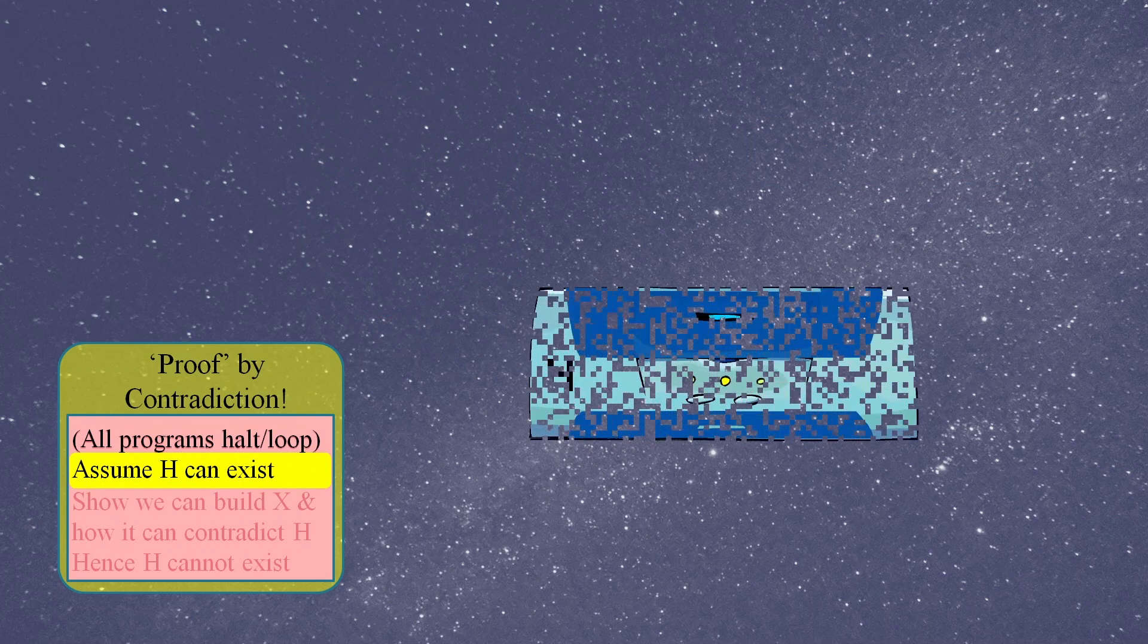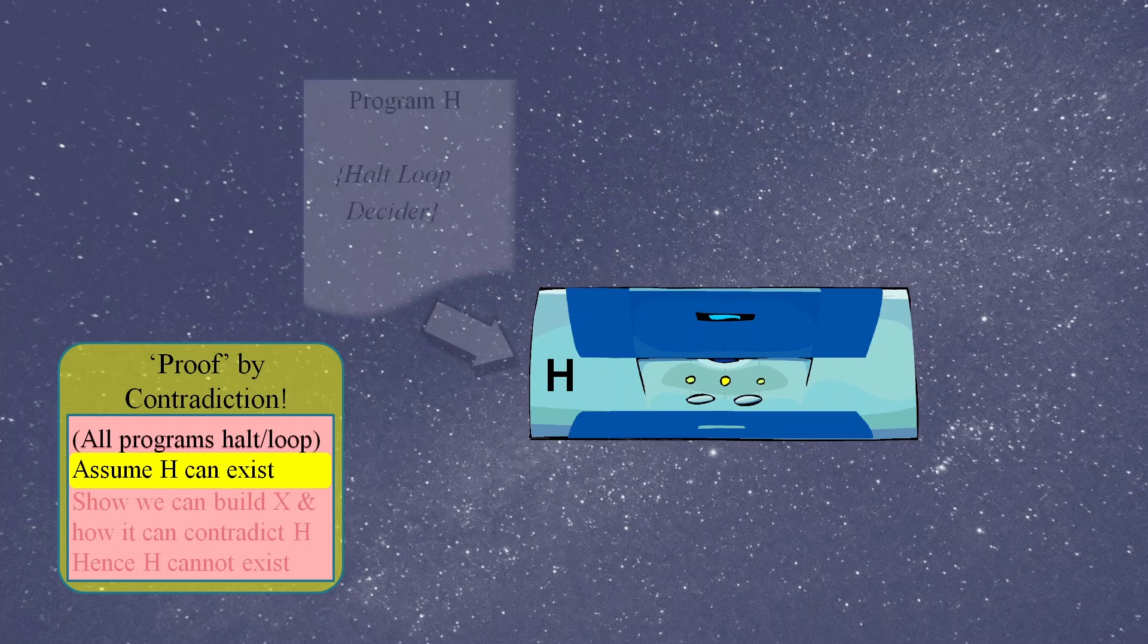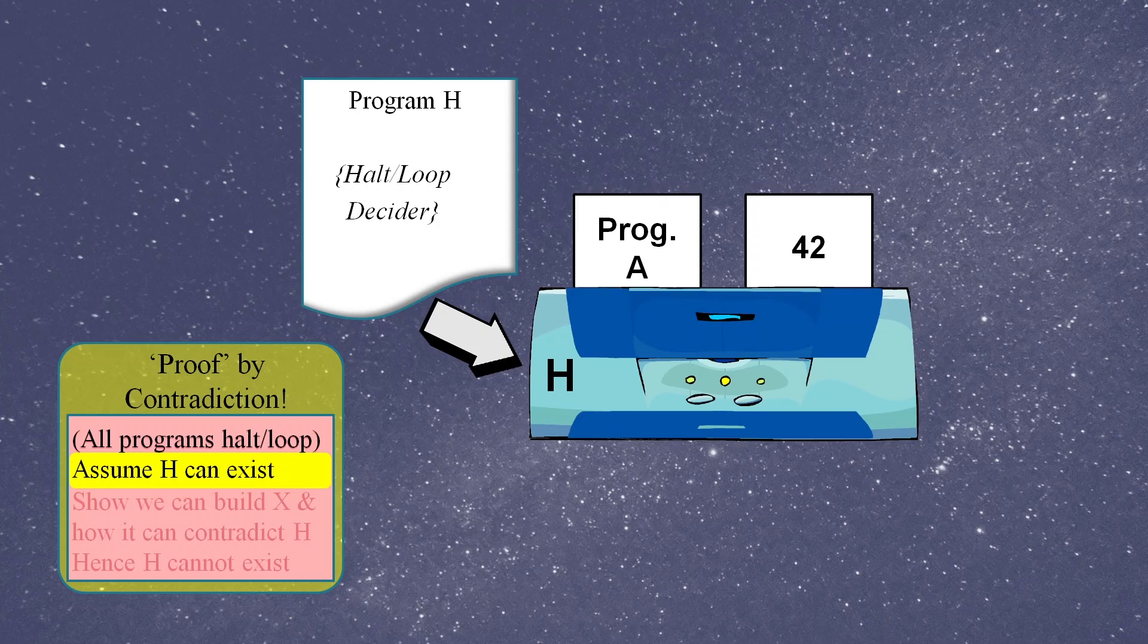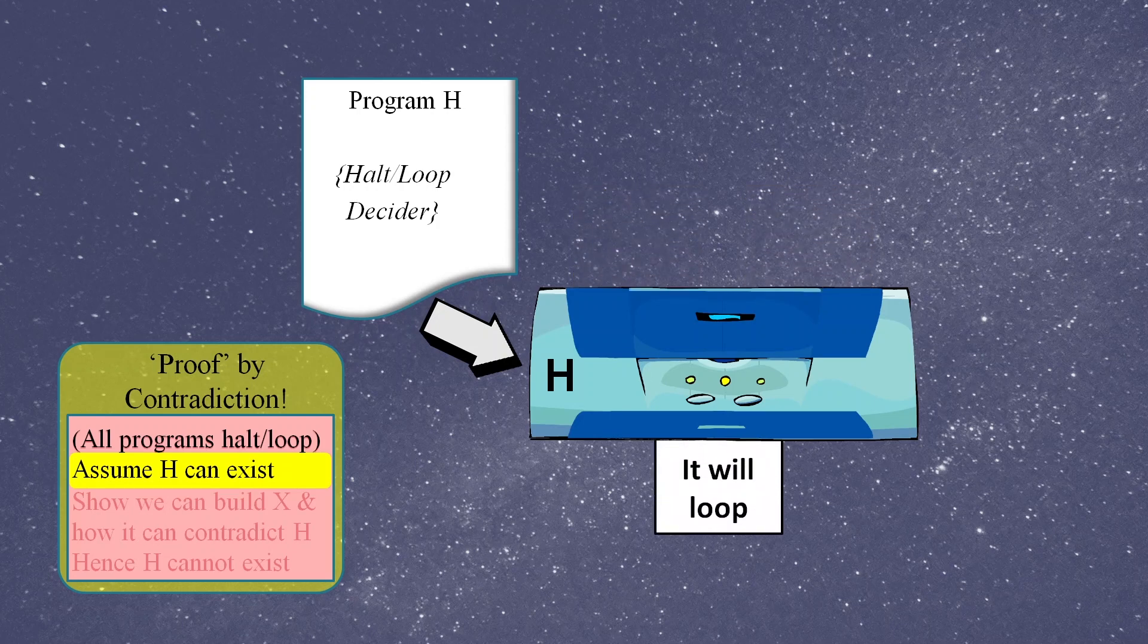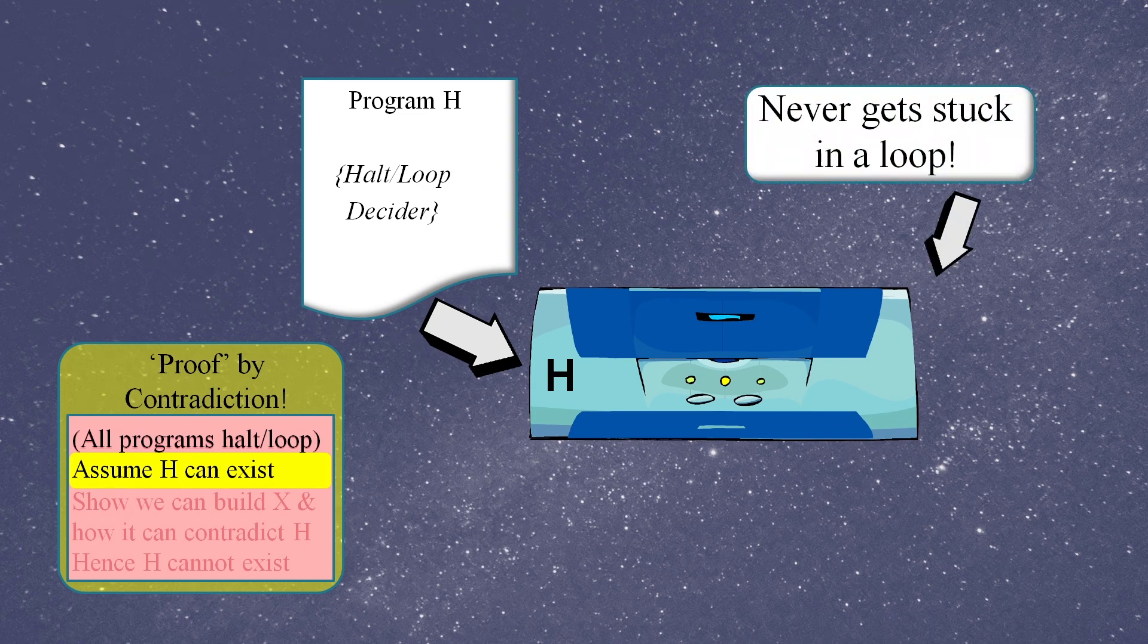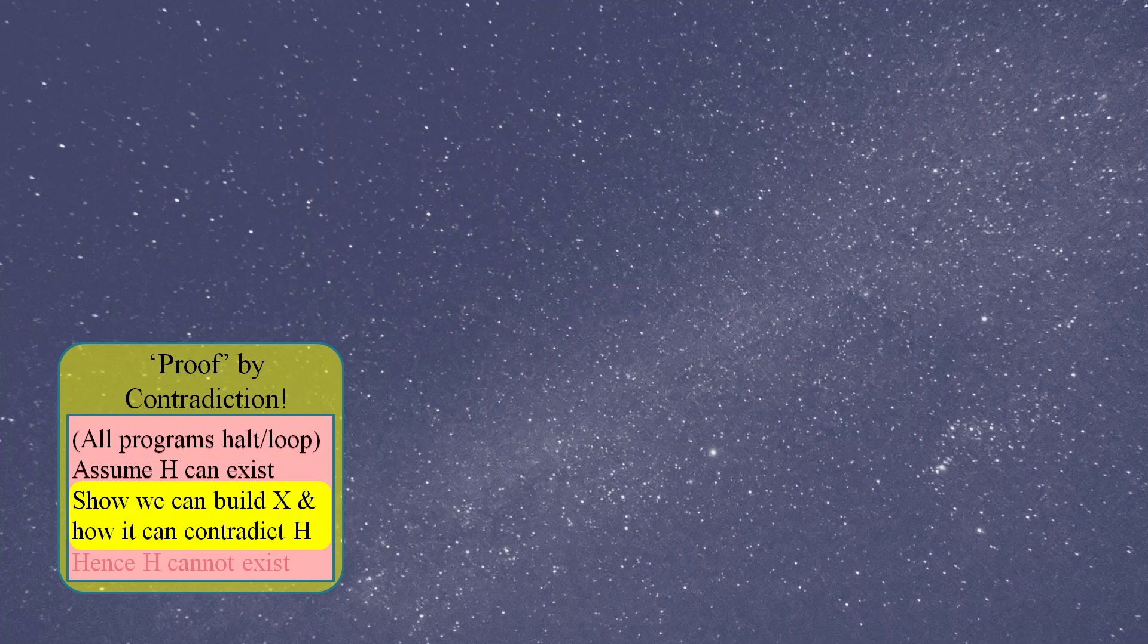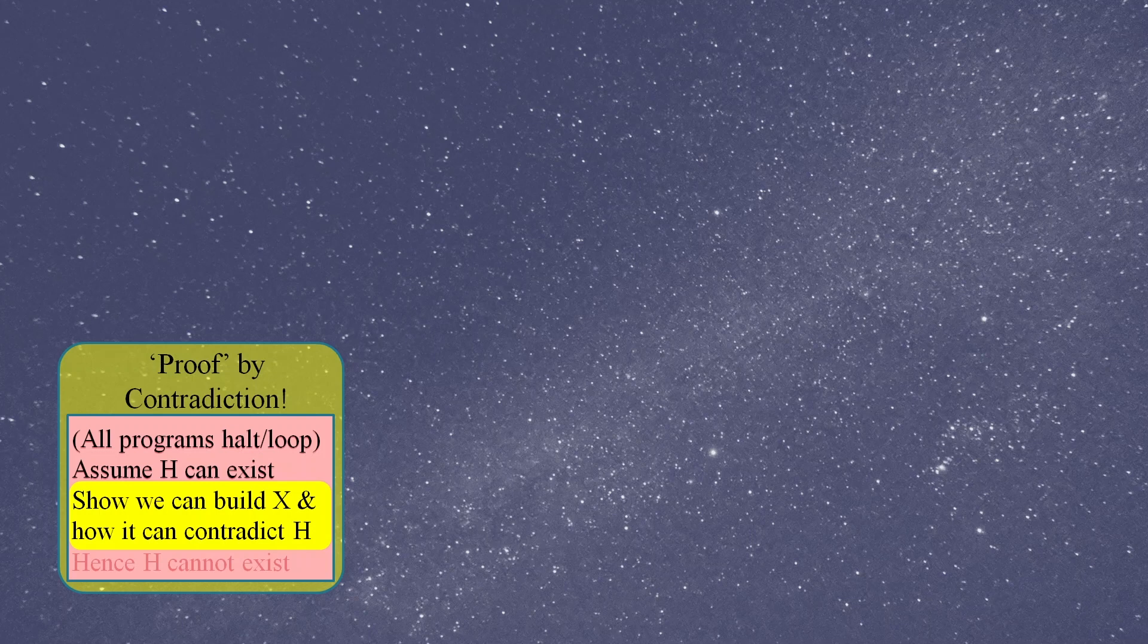We'll call this program, program H. So if we feed into H the program A and the number 42, then the halt loop decider will determine that program A will loop. An important aspect of this halt loop decider is that it should never get stuck in a loop itself. The next stage of the proof is the clever bit, where we show we can build a program called program X that is able to contradict the output of program H.